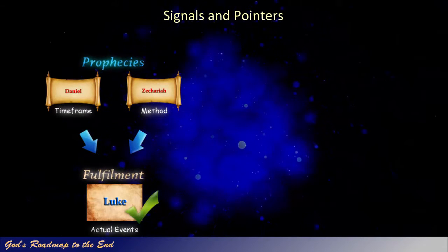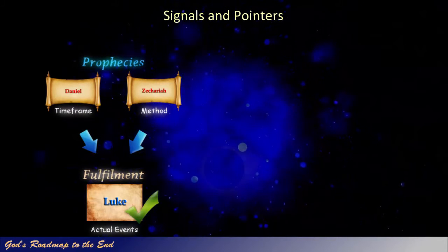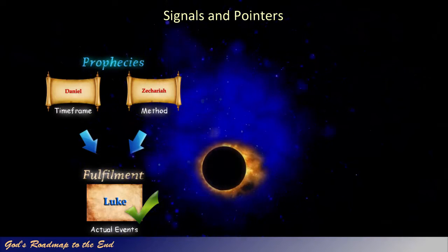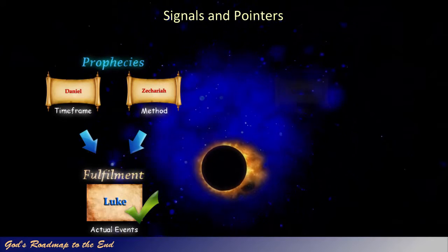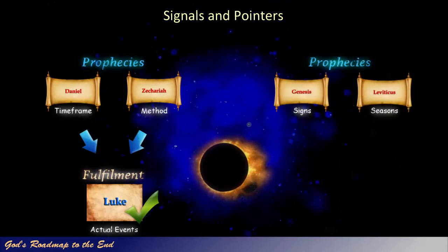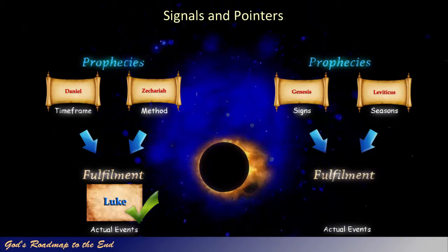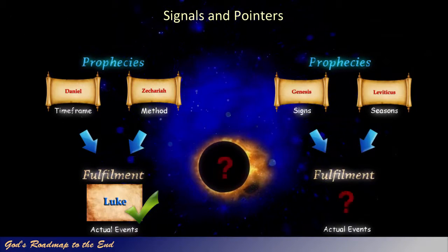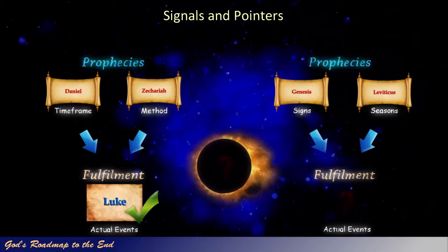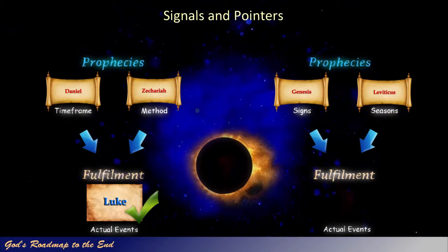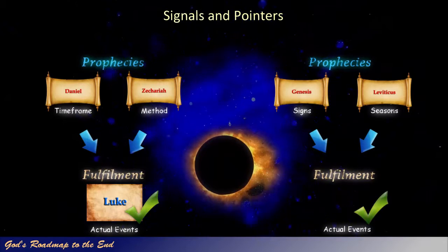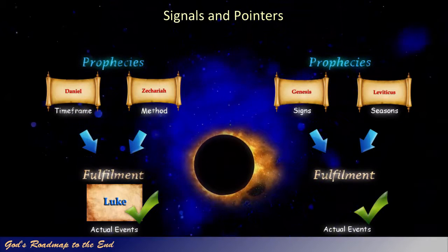If God's word is truly reliable, we would also expect to see God providing a heavenly signal to mark the fulfillment of his appointed times, as prophesied in Genesis 1 verse 14 and Leviticus 23. So, can we find any evidence for such a celestial signal? How exactly did God mark these appointed times that were fulfilled by Israel's Messiah? It is truly amazing to discover that God did indeed mark the spring season of feast days with a very unusual celestial event.